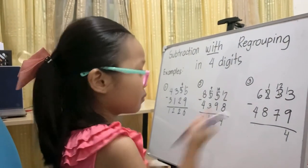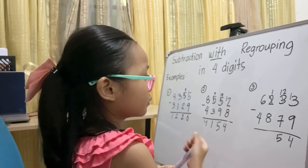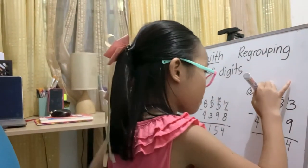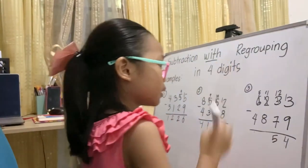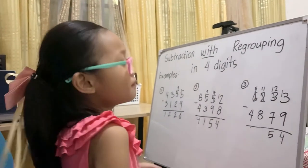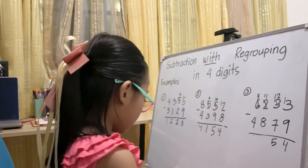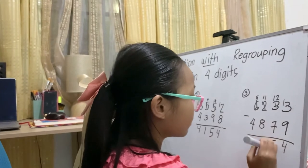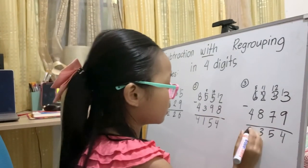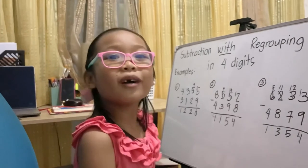Two becomes 12, and two becomes one. One becomes 11, and six becomes five. And the answer is 1,354. Bye!